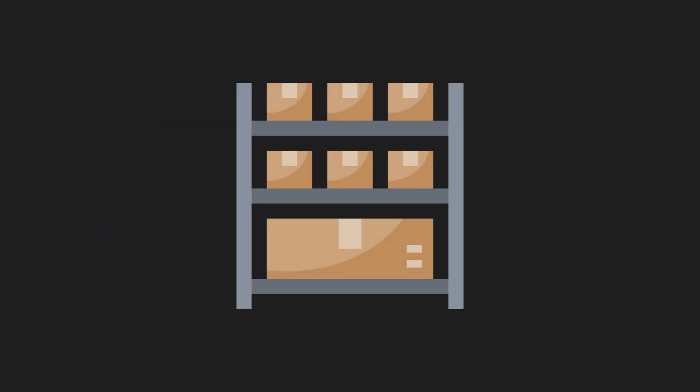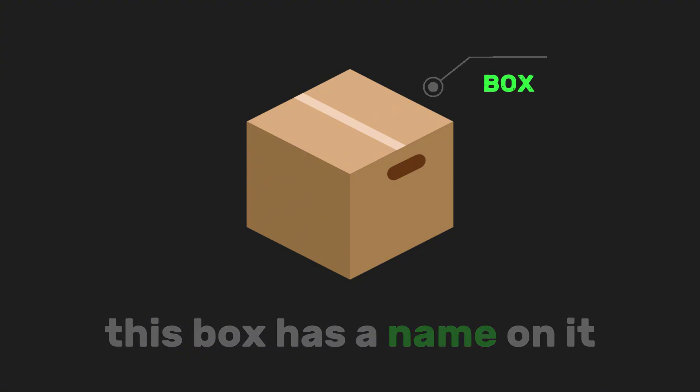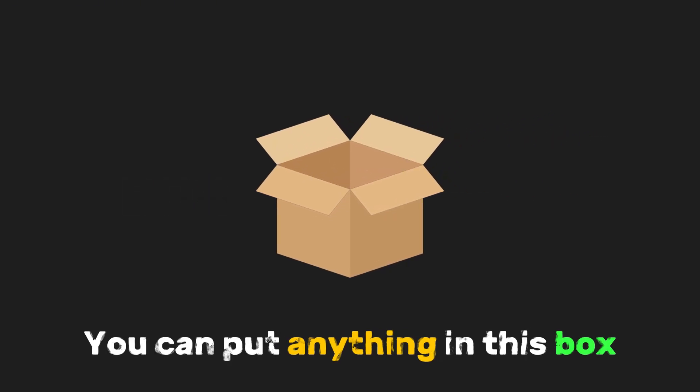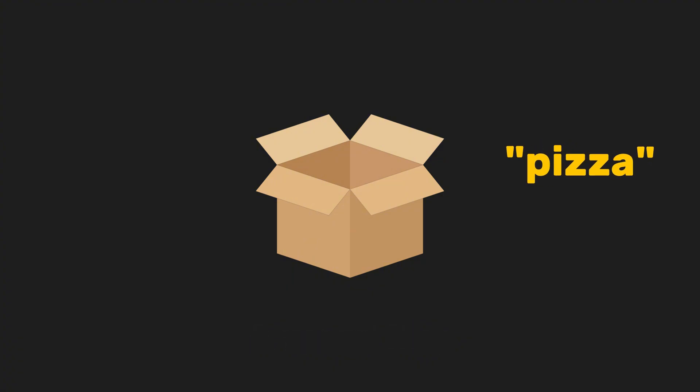Think of a variable as a box that you keep on a shelf. But it's not just any box — this box has a name on it. You can use that name to open the box later and see what's inside. You can put anything in this box: a number like seven, a word like pizza, or even a list of things.